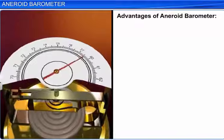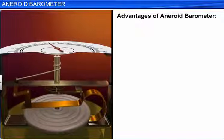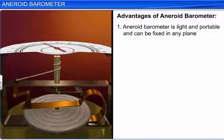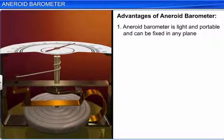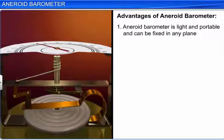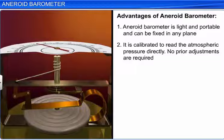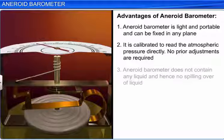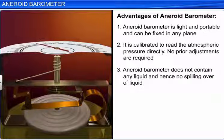Aneroid barometers have some advantages over liquid barometers. An aneroid barometer is light and portable and can be fixed in any plane. It is calibrated to read atmospheric pressure directly. No prior adjustments are necessary. An aneroid barometer does not contain any liquid, and hence, there is no fear of the liquid spilling over.